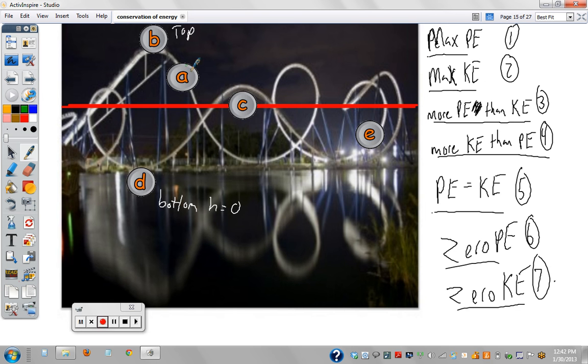Given this roller coaster path and all these points along the path, can you tell me which of these points represent each of these? Some have more than one answer. Pause the video and fill these out, or fast-forward if you've done this already.